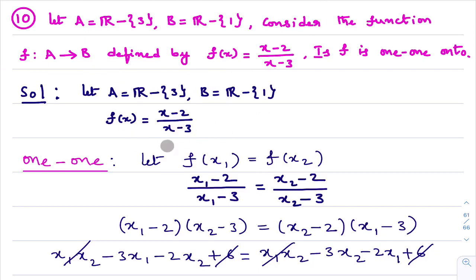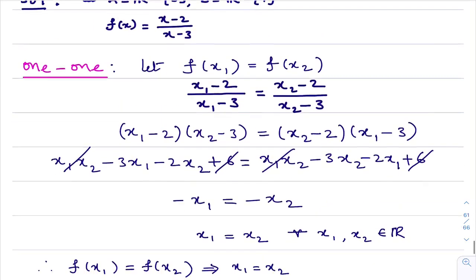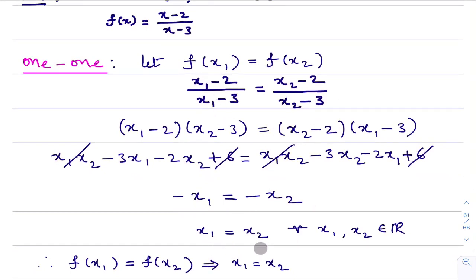I need to check the one-one function. You know how we check one-one function — first, we take f(x1) equal to f(x2) and start simplifying. If after simplification we get x1 equal to x2, then we say the function is one-one. Here f(x1) is x1 minus 2 divided by x1 minus 3, and f(x2) is x2 minus 2 divided by x2 minus 3.